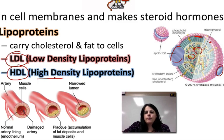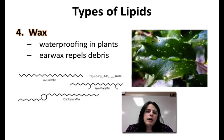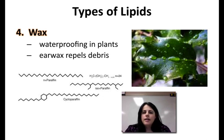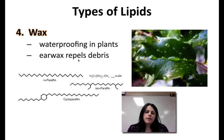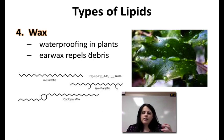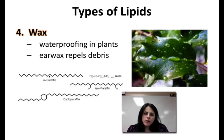We'll talk a little bit more about cholesterol in class. The last type of lipid is wax — I'm not really going to touch on it much except to mention that it exists. Wax is a type of lipid. It hates water. In plants, it's good for waterproofing their leaves and stems. In us, earwax is a type of wax that actually repels debris and collects dirt and things that shouldn't be going inside your ear canal. They're made of really, really long fatty acids.